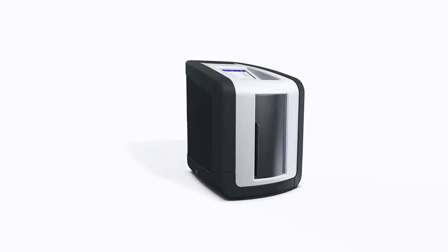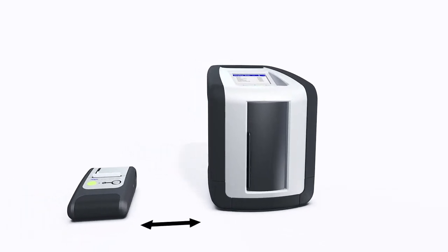You can print out test results from anywhere, anytime, using the optional printer available from Draeger. Place the printer to the left of the analyzer, about a hand's width away. Make sure that the two infrared interfaces are facing each other.